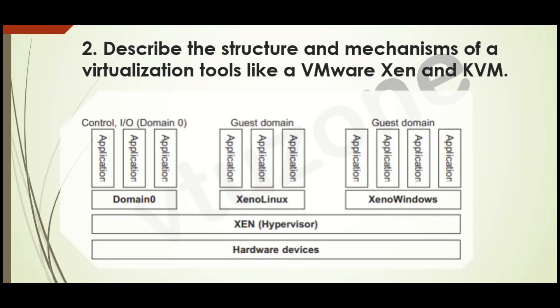This diagram explains how Xen virtualization works. It's like managing multiple computers inside one system. At the bottom, we have the real hardware like CPU, memory, and storage. Above that is the Xen hypervisor — the software that controls everything. It decides who uses the hardware and when.